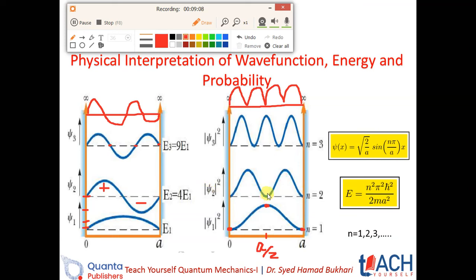When we talk about psi 2, the probability is again zero at the walls in every case. But importantly, the probability is also zero at the center of the well for psi 2, and it is maximum at two other points. For psi 3, the probability is again zero at the edge of the wall, but maximum at the center of the well. For psi 4, the probability is again zero at the center of the well.